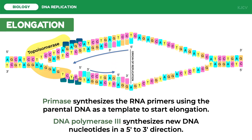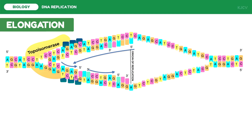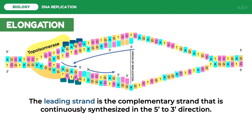Since the orientation is reversed on this strand, DNA polymerase has to dissolve from the finished segment and reassemble itself to the newly exposed fragment. The complementary strand that is continuously synthesized in the 5 prime to 3 prime direction is called the leading strand.